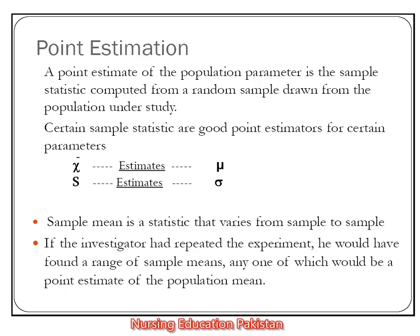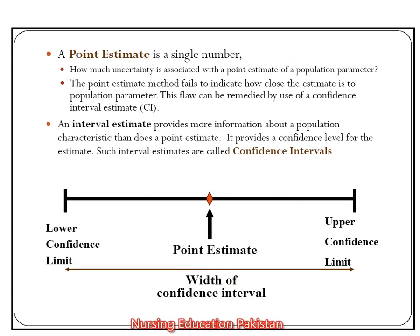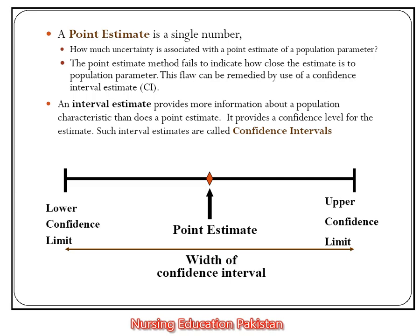If we repeat an experiment multiple times, we have a range of sample means. With a range of sample means, we are able to estimate the same population. The point estimator is a single number. The question is: how much uncertainty is associated with a point estimate of a population parameter? Because a single value — how often is it correct for a population parameter? When we generalize it, this is a question mark.